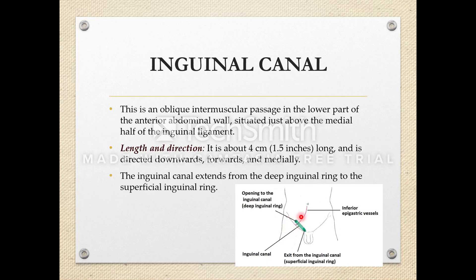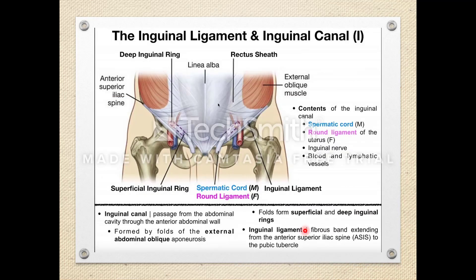The inguinal canal extends from the deep inguinal ring to the superficial inguinal ring. In the diagram, we can see the anterior superior iliac spine, the pubic tubercle, and the inguinal ligament. The inguinal canal is above the medial half of the inguinal ligament, running from the deep inguinal ring to the superficial inguinal ring, and is four centimeters long.